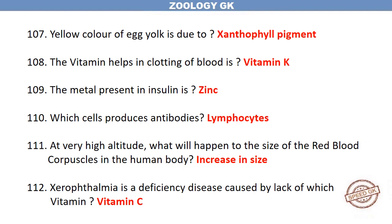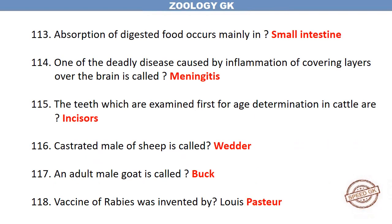Which cells produce antibodies? Lymphocytes. At very high altitude, what will happen to the size of the red blood corpuscles in the human body? They increase in size. Xerophthalmia is a deficiency disease caused by lack of which vitamin? Vitamin C. Absorption of digested food occurs mainly in the small intestine.